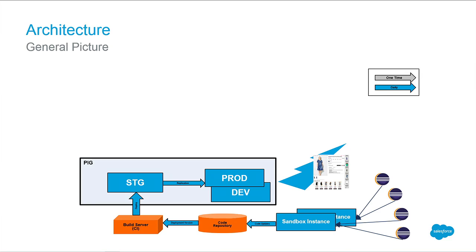Now into the architecture. This is what we consider a basic e-com platform architecture. On the right we have our IDE — integrated development environment — where your developers will work. They'll push to a sandbox, use a code repository, a build server for regression testing, and then push the code to staging and then to production.